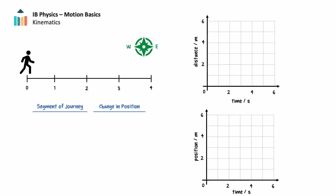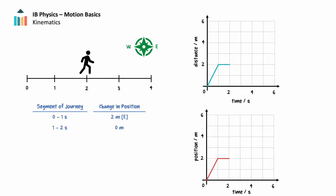Let's consider how direction plays a role in distance and displacement in more detail. We're going to present a simple journey — a person walking in opposite directions over a period of time — and examine how we can represent this graphically using distance-time and position or displacement-time graphs. Consider the person walks two meters east in one second, then pauses in place for one second. For this segment, the distance traveled, two meters, and the displacement, two meters east, have the same magnitude. The displacement also has a direction, east, whereas the distance doesn't.